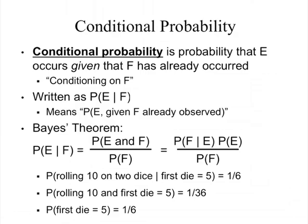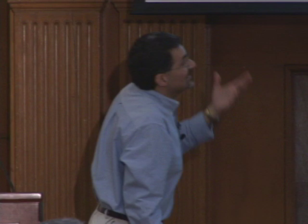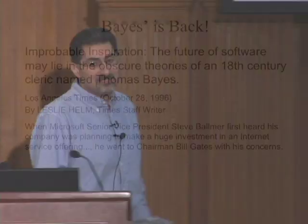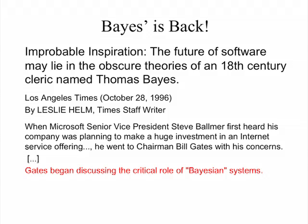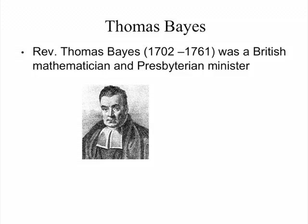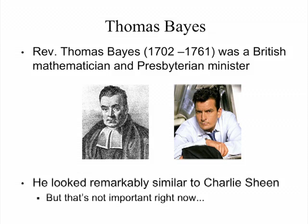This idea dates back to the 18th century with Thomas Bayes, but it's interesting that back in 1996 Steve Ballmer was still a senior vice president of Microsoft and Bill Gates was already talking about the role of Bayesian systems in computer systems. It's really in the last couple of decades that a lot of this stuff has come to the fore. Here's a picture of Thomas Bayes for historical completeness — an 18th century British mathematician and Presbyterian minister who, oddly enough, looks remarkably similar to Charlie Sheen.